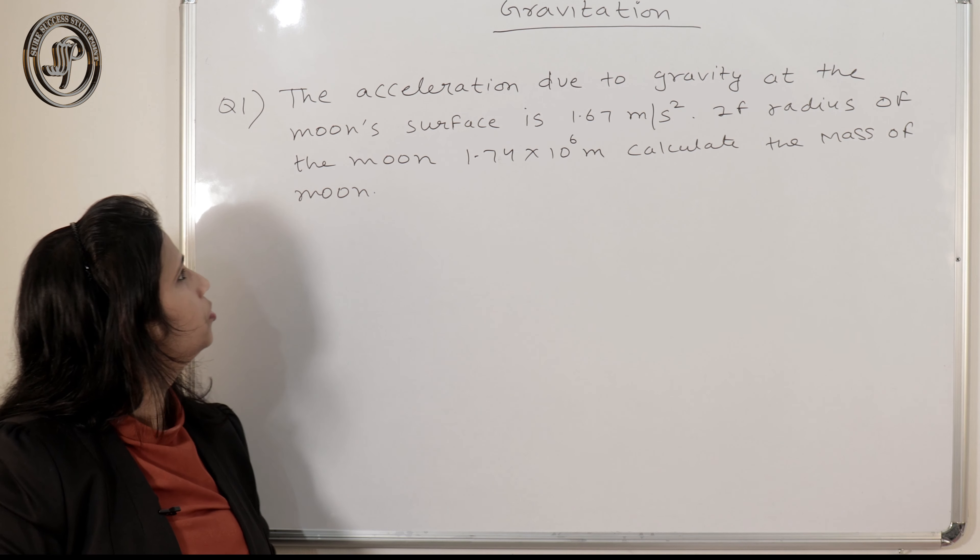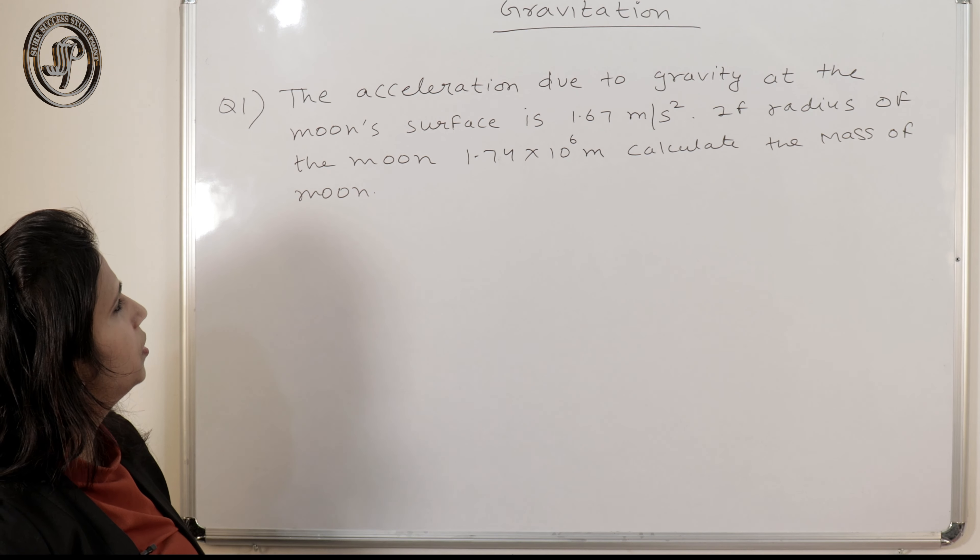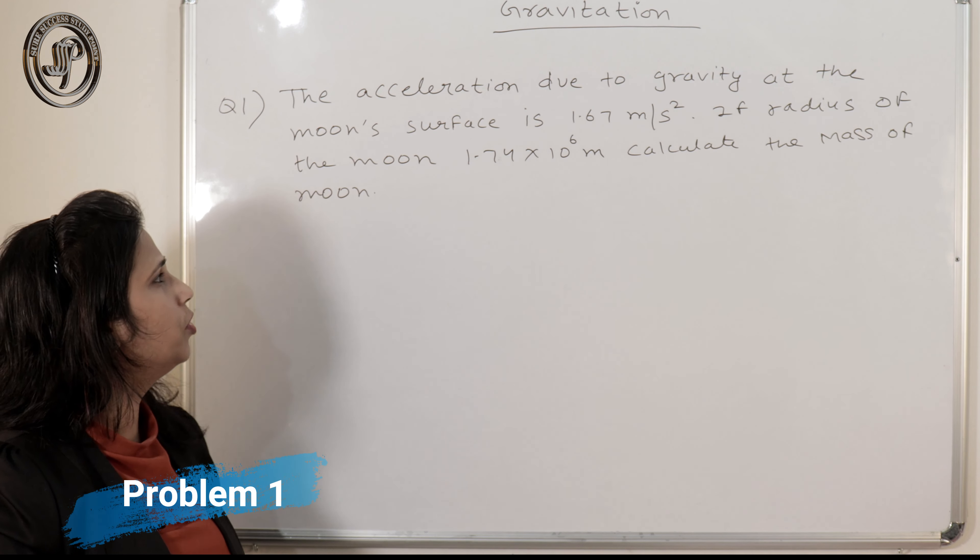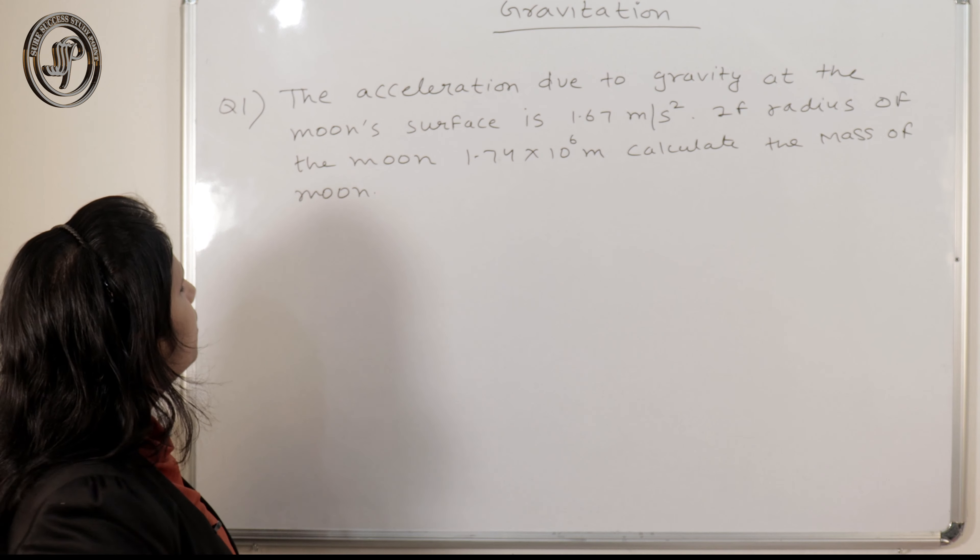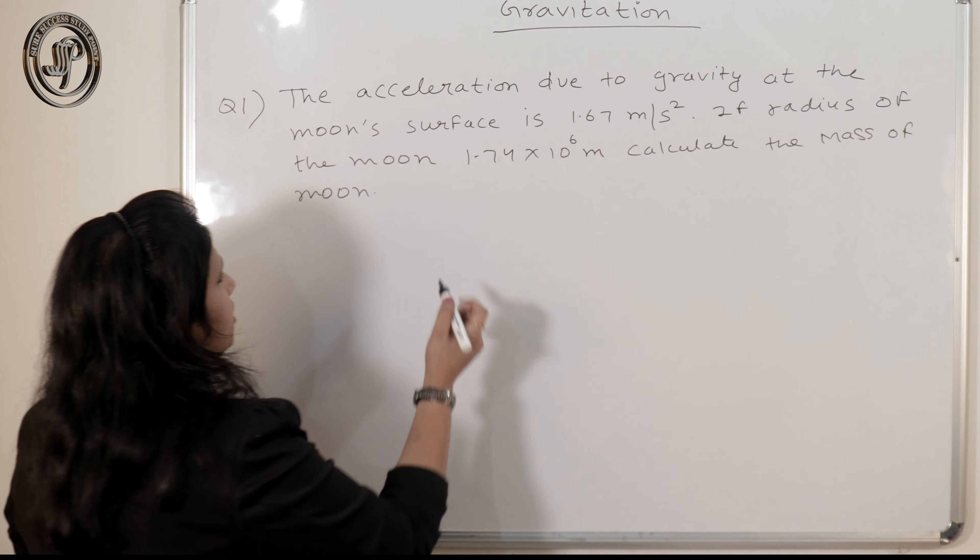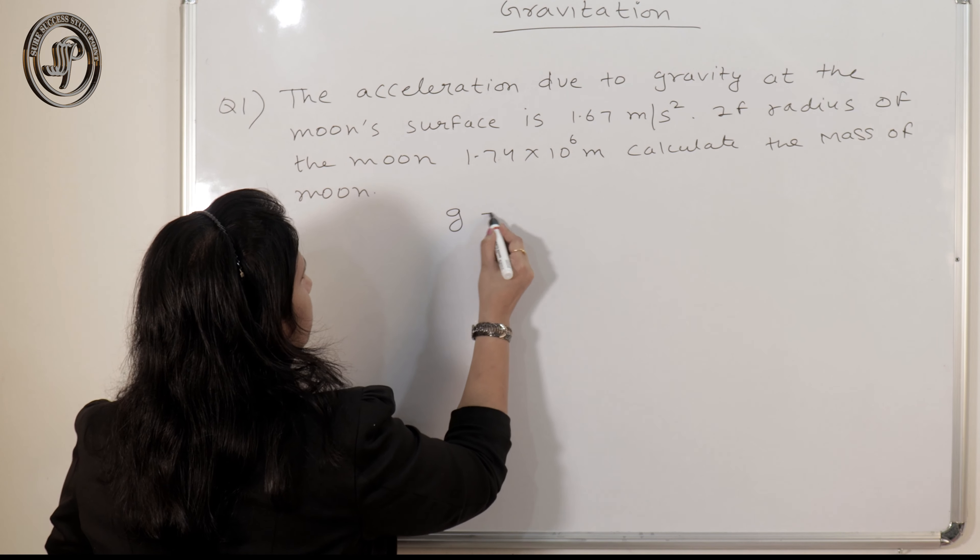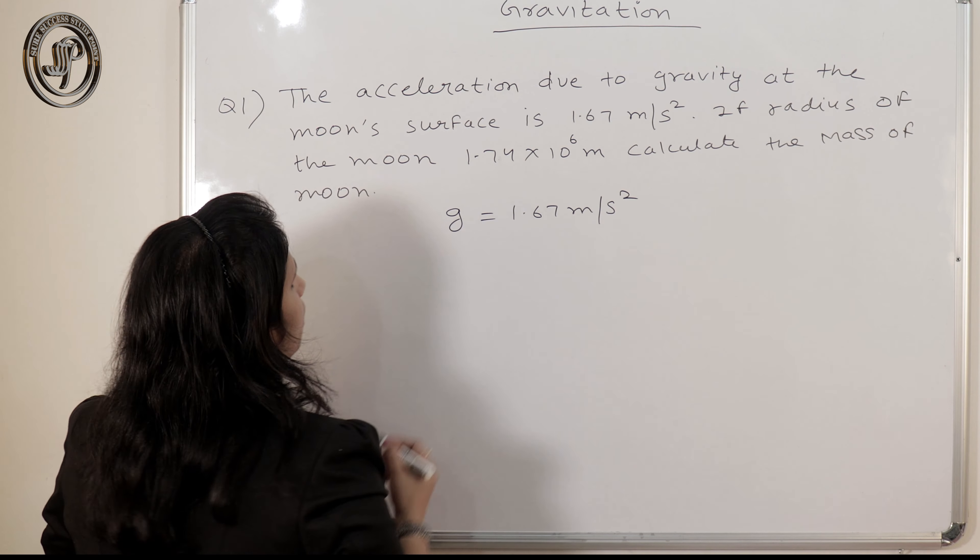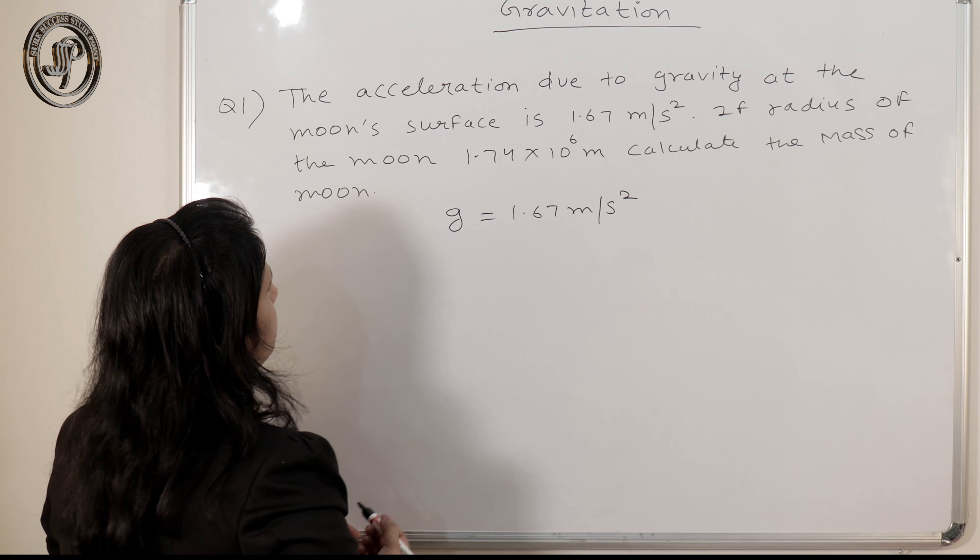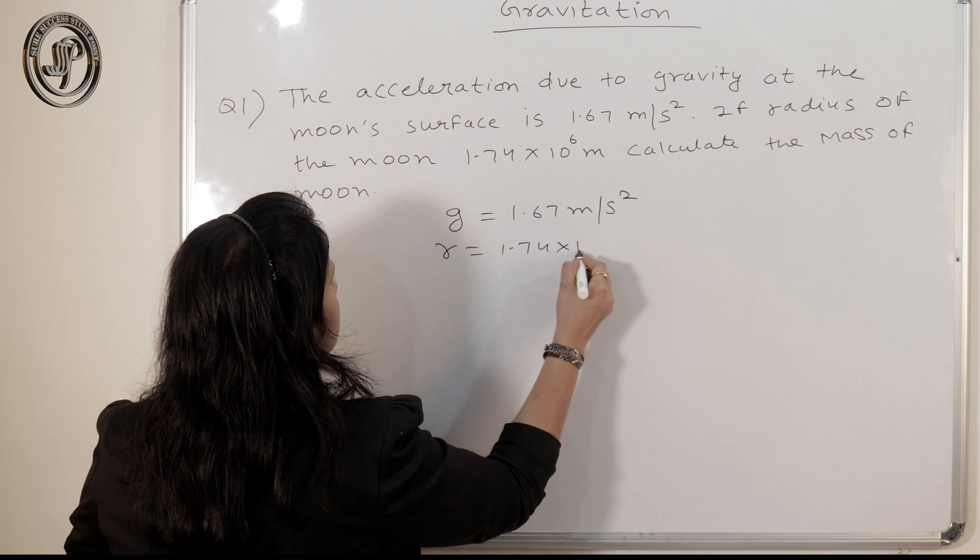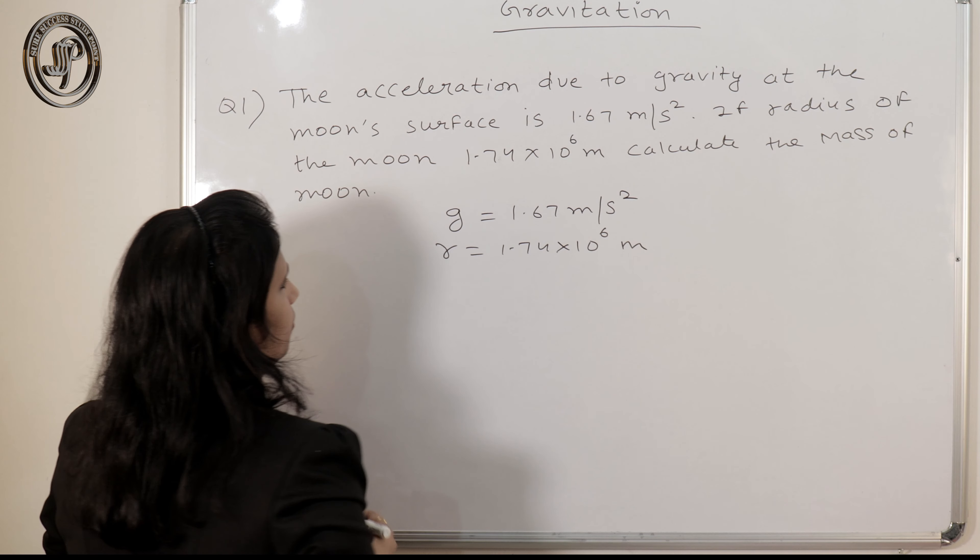Let's see a question. The acceleration due to gravity at the moon's surface is 1.67 meter per second square. The radius of the moon is 1.74 into 10 to the power 6 meter. Calculate the mass of the moon. Here, what is given? Acceleration due to gravity on the surface of moon is given 1.67 meter per second square, and the radius of moon is given.